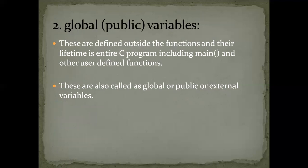The second classification is the global variable, also called public variable. These are defined outside the functions and their lifetime spans the entire C program, including main and other user-defined functions. Global variables are used to share data between many functions in a C program, and they are also called external variables.